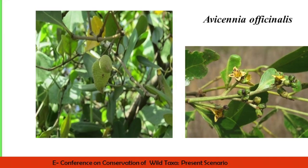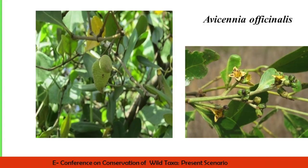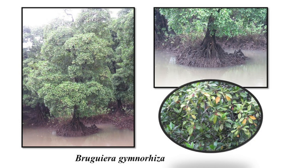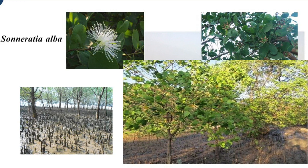The next important species is Bruguiera cylindrica, which is medicinal. Then Avicennia officinalis is another species common throughout the Maharashtra coast. Then Bruguiera gymnorrhiza — I have kept one photograph specifically for its root system adaptations. In Bruguiera gymnorrhiza we can observe a buttress type of root system, which supports the species in the estuarine and intertidal region. Another important species occurring throughout the Maharashtra coast is Sonneratia alba, which has a very beautiful, attractive flower and is one more common species on the Maharashtra coast.